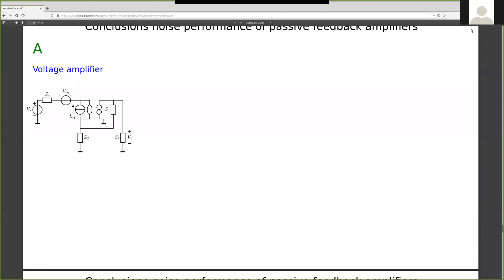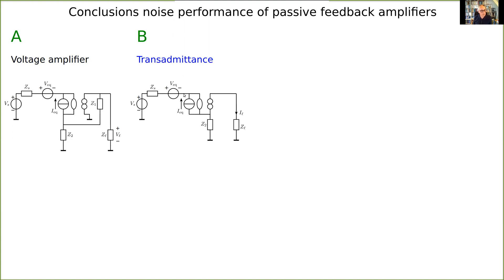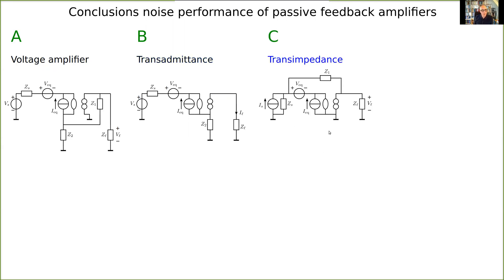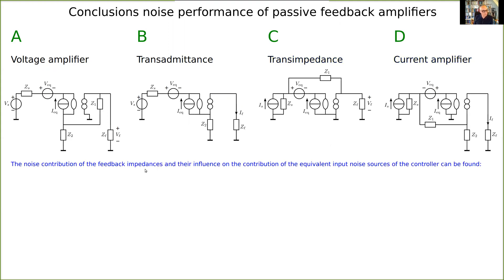Here is the voltage amplifier with all the impedances from the feedback network, source, and load, and the equivalent noise sources. The noise of the two feedback impedances is not drawn in this picture, but the source impedance and feedback impedances can all be noisy and must be added. This applies to the trans-admittance amplifier with the noisy nuller and feedback impedance, the trans-impedance amplifier, and the current gain amplifier. Now let's look at the conclusion regarding the noise contribution of the feedback impedances.